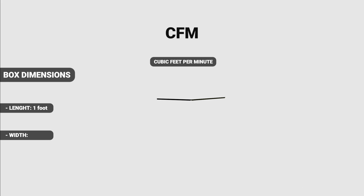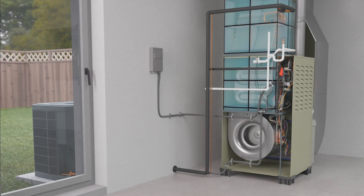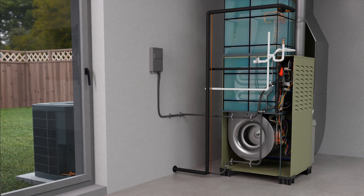CFM stands for cubic feet per minute. If we think of a cubic foot of air as a box that's one foot long, one foot wide, and one foot tall, then we can think of CFM as the number of those boxes we move by the blower per minute.